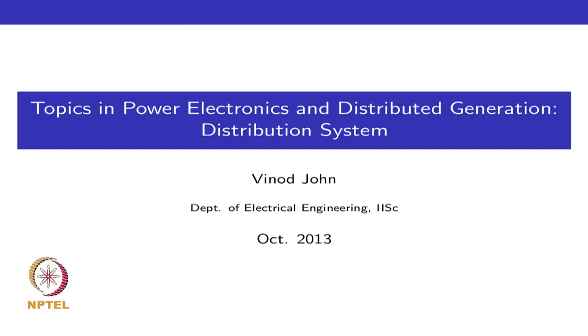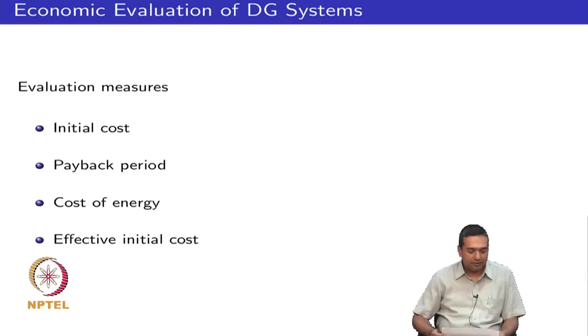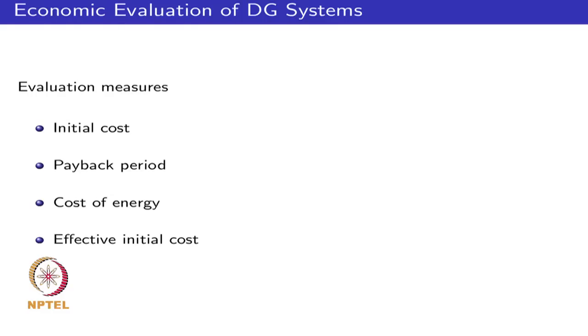Welcome to class 23 on topics in bioelectronics and distributed generation. We have been talking about economic evaluation of DG systems and looked at a few measures: the simplest is the initial cost, which is a short-term decision; payback period is more on a commercial time frame; and cost of energy is a much longer-term measure useful for policy considerations.